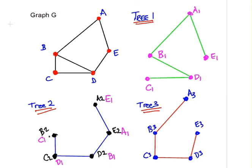Likewise, we could say the same thing about the third tree, tree number three, that it's isomorphic to tree one and tree two.